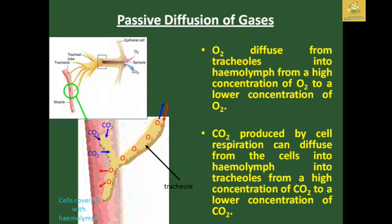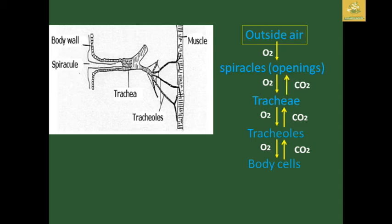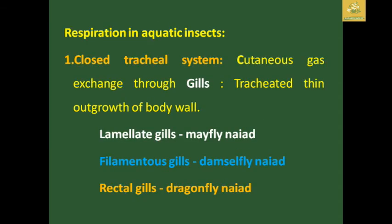The diffusion of gases in the insect body is passive diffusion. O₂ diffuses from tracheoles into the hemolymph from a high concentration to a low concentration of oxygen. Carbon dioxide produced by cellular respiration passively diffuses from the blood to the tracheal cells, moving from high CO₂ concentration to lower CO₂. Air enters through the spiracular openings, moves to the trachea, then tracheoles, and finally to body cells. CO₂ moves in reverse — from tracheoles to trachea to spiracular openings and outside.